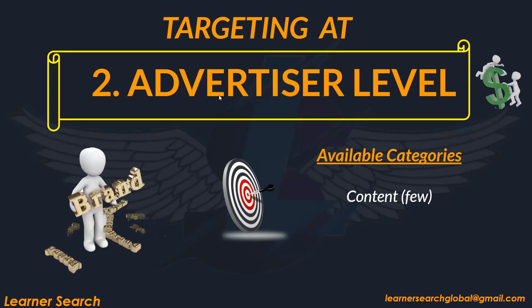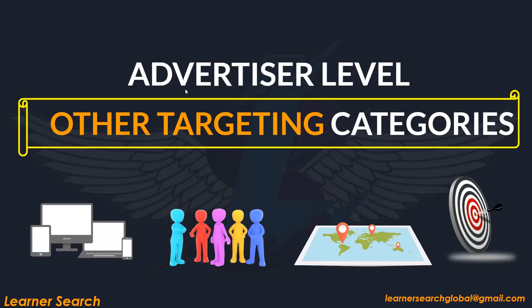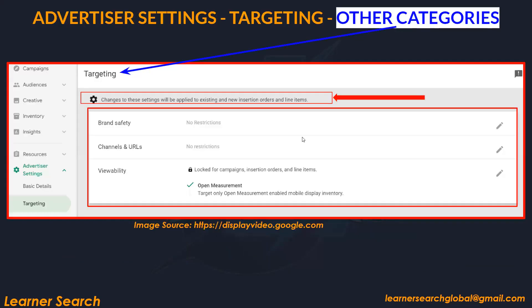How targeting works at advertiser level: available categories are only content, so there is no audience, technology, or inventory source targeting. Only content categories are available, and since inventory source targeting is not available, we are not discussing that. Let's look into the other targeting categories — these are the main targeting categories available at advertiser level.